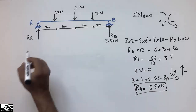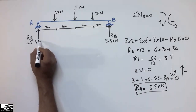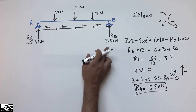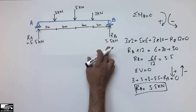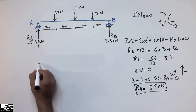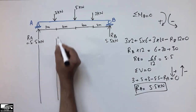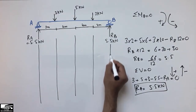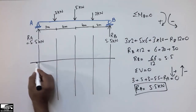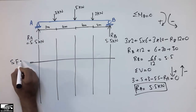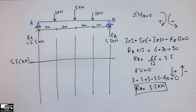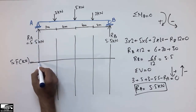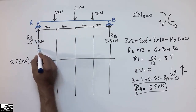The RA and RB values are the same in this case at 5.5 kN and 5.5 kN, though they may differ in other cases. Now to draw the shear force diagram, I have to extend the reference lines where each load is acting. The shear force is in units of kN.